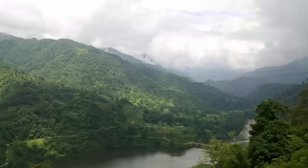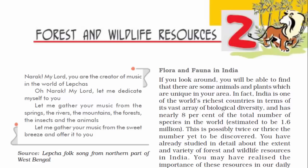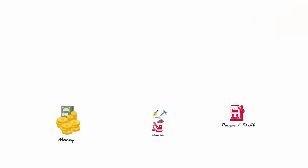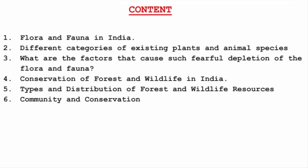A forest is a large area of land covered with trees or natural vegetation. Wildlife refers to wild animals collectively. Resources means any stock or supply of money, materials, staff, and other assets that can be drawn by a person or organization in order to function effectively. Here is a brief overview of what we will read in this chapter.